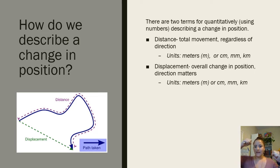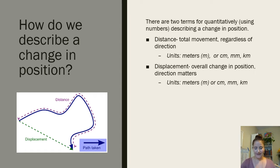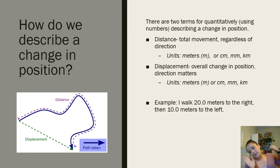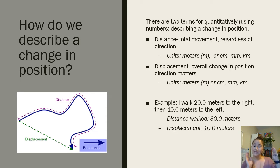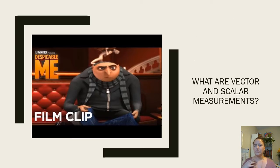Then there's also displacement. Displacement is your overall change in position — basically, if you were to draw a straight line from where you start to where you end, that is your displacement, even if you took some roundabout way to get there. It's still in units of position change: meters, centimeters, or kilometers. For example, if I walk 20 meters to the right and then 10 meters to the left, I walked 30 meters total distance, but my displacement is only 10 meters because I'm only 10 meters away from where I started.